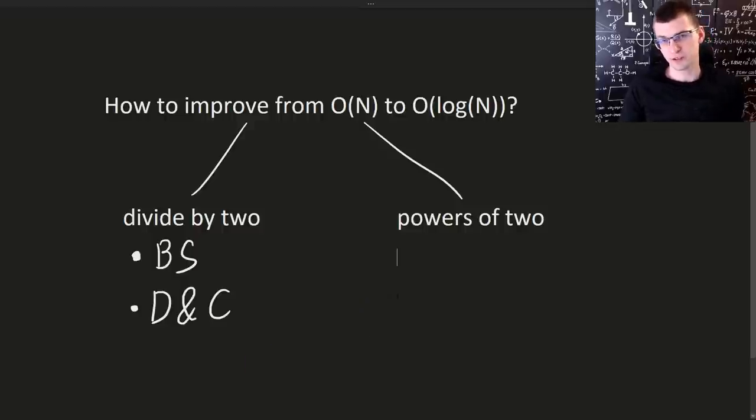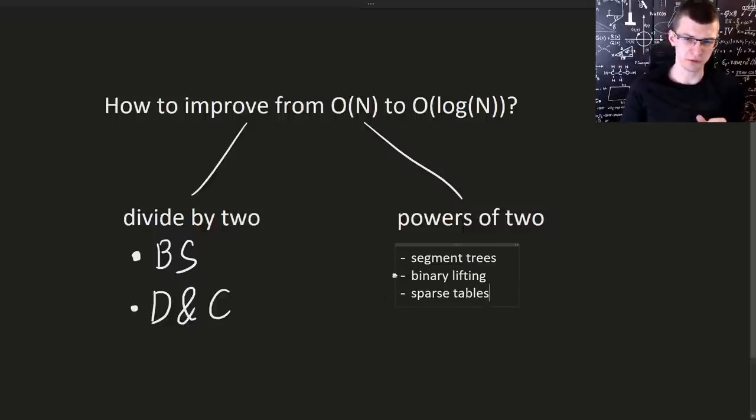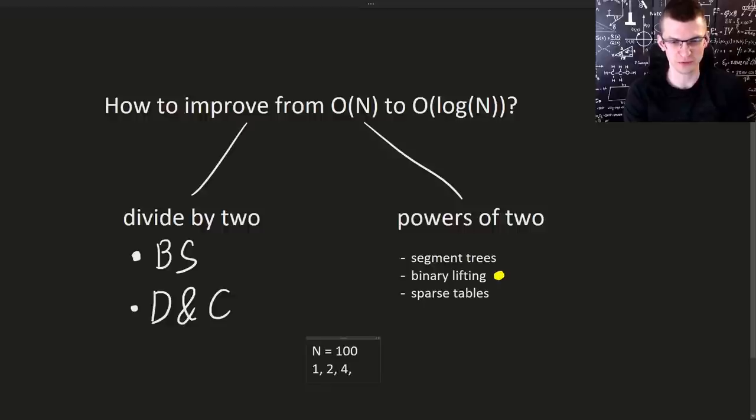The other method related to binary logarithm is to use powers of 2. This is less common but it appears in segment trees. We will not talk about them today but also binary lifting and sparse tables. Sparse tables is something we will discuss in a future video but the topic of today is binary lifting. Still, what's going on with powers of 2? Well, there is logarithmic number of powers of 2. If n is 100 then available powers of 2 are 1, 2, 4, 8 and so on up to 64 and the number of available powers is logarithm of n.